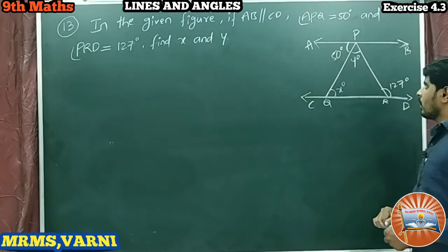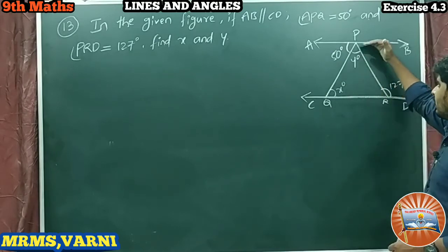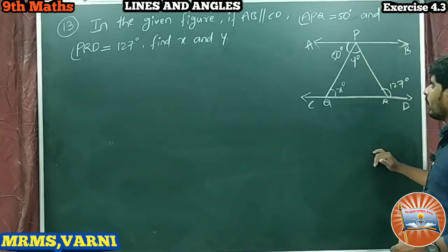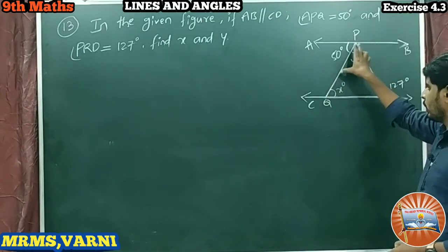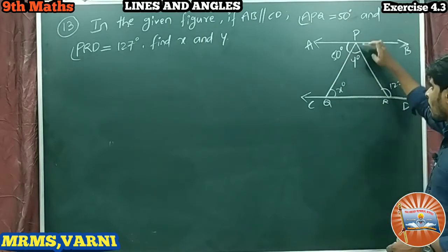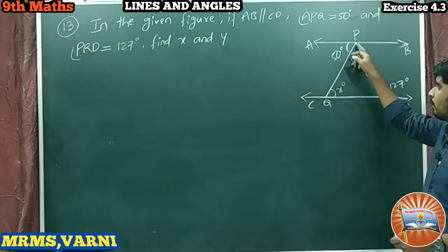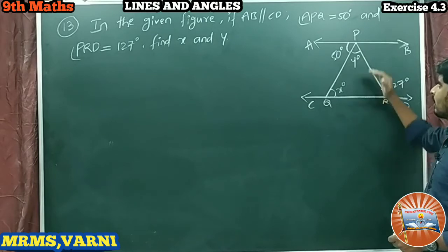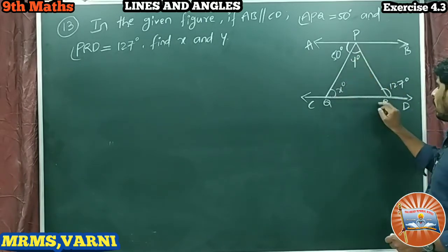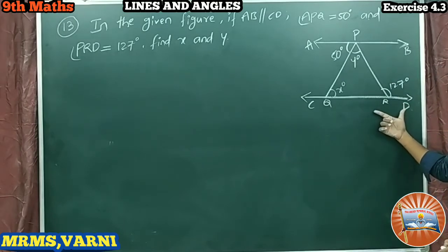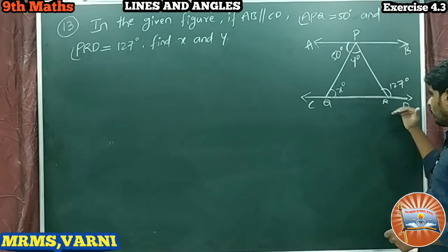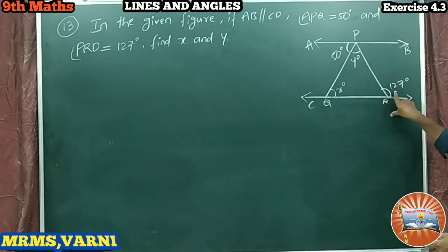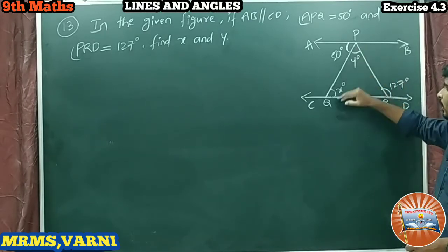In this figure, AB line is parallel to CD line. If these two are parallel lines, PQ is a transversal as well as PR is also a transversal. These PQ and PR transversals make triangle PQR here. QD is a side extension of QR — the QR extension is QD — and it makes an angle of 127 degrees. This 127 degrees is an exterior angle of triangle PQR.